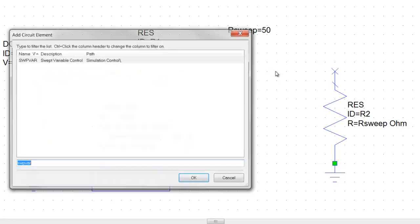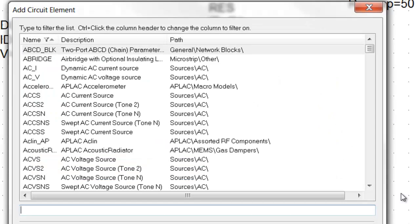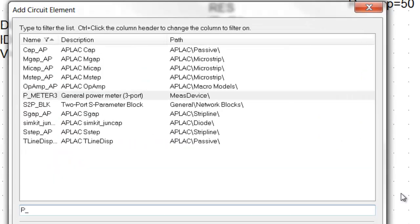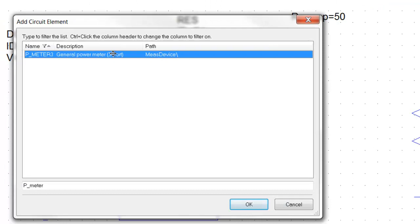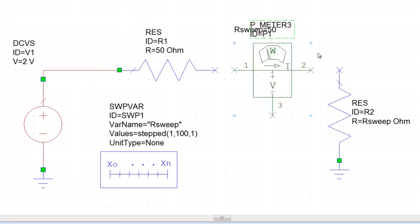And then insert a power meter there. So we again press CTRL L. We look for a power meter, which is called PMeter3. Double click, place on the schematic. We insert a ground reference and then connect the element in series with the load resistance.